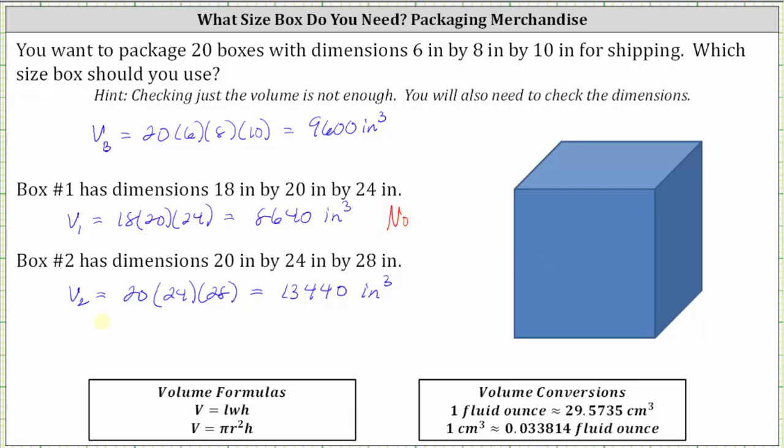Notice the volume of box two is greater than the volume of the 20 smaller boxes, but that alone does not tell us that box two is large enough. We also need to check the dimensions to make sure at least 20 of the smaller boxes will fit inside box two. Let's do this on the next slide.